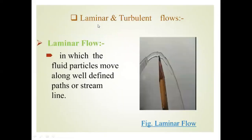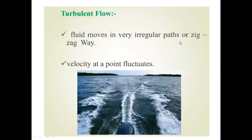The third type is laminar and turbulent flow. Laminar means the particles present in the fluid move in a well-defined or streamlined path. Turbulent means the particles' movement is random or in a zigzag pattern — the velocity at any point gets fluctuated. That is defined as turbulent flow.